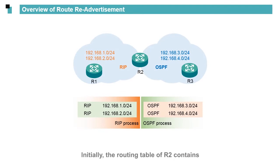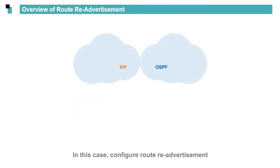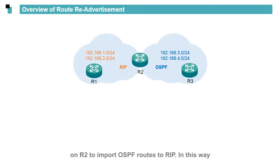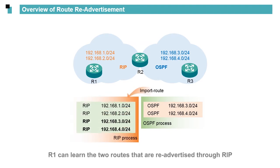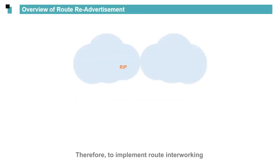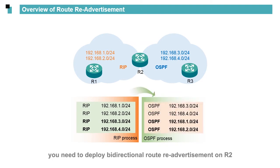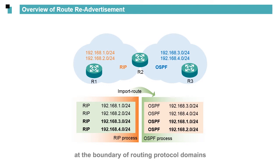Initially, the routing table of R2 contains both RIP routes and OSPF routes. By default, R1 cannot learn routes from R3, nor can R3 learn routes from R1. Configure route readvertisement on R2 to import OSPF routes to RIP, allowing R1 to learn the two routes readvertised through RIP. Because route readvertisement is directional, to implement full interworking you need to deploy bi-directional route readvertisement on R2. The device running multiple routing protocols at the boundary is called an Autonomous System Boundary Router, or ASBR.